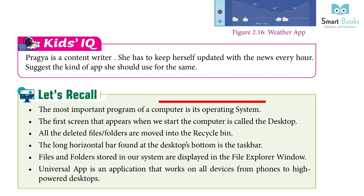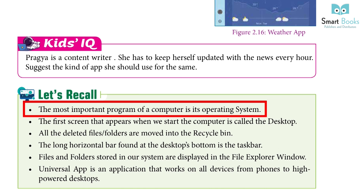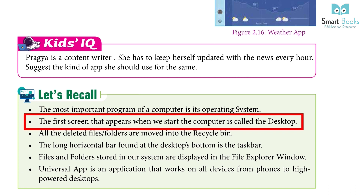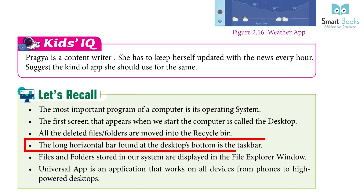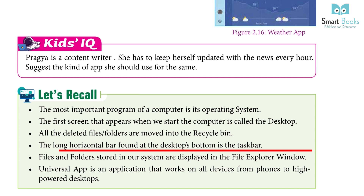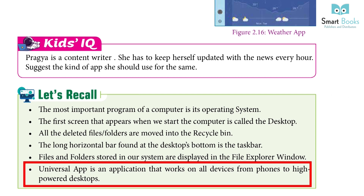Let's Recall: The most important program of a computer is its operating system. The first screen that appears when we start the computer is called the desktop. All deleted files and folders are moved into the Recycle Bin. The long horizontal bar found at the desktop bottom is the taskbar. Files and folders stored in our system are displayed in the File Explorer window. A universal app is an application that works on all devices from phones to high-powered desktops.